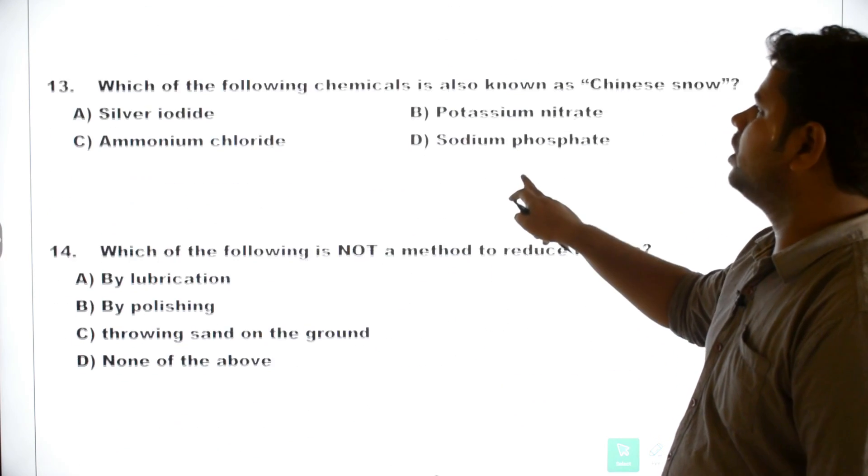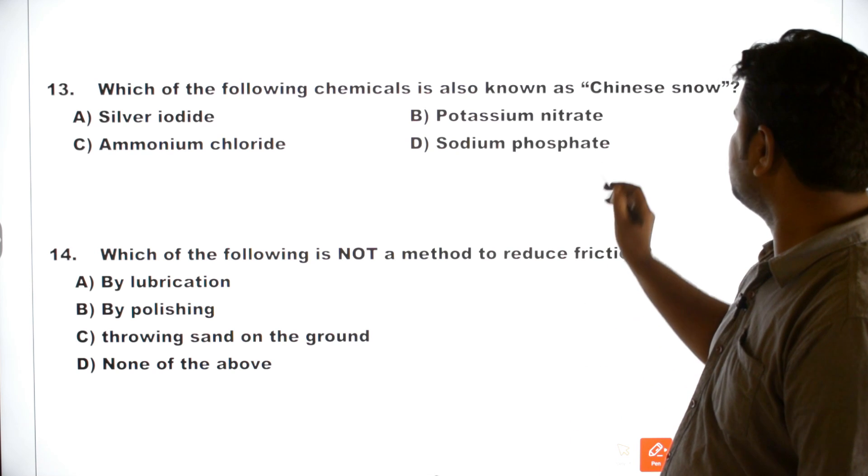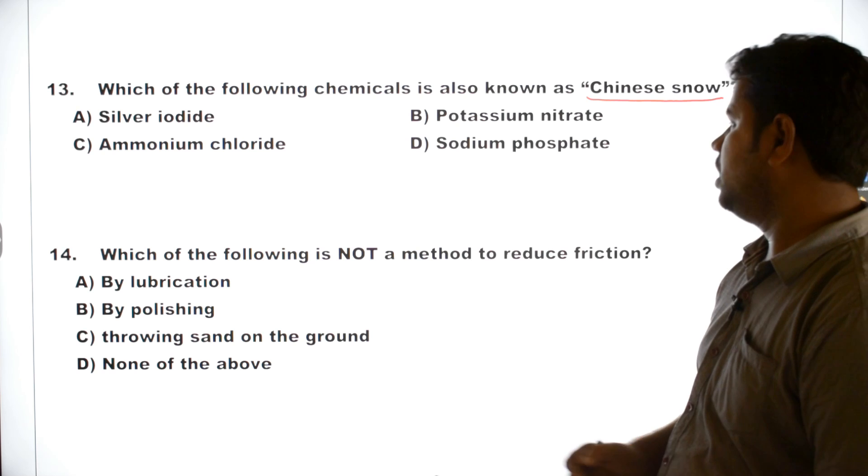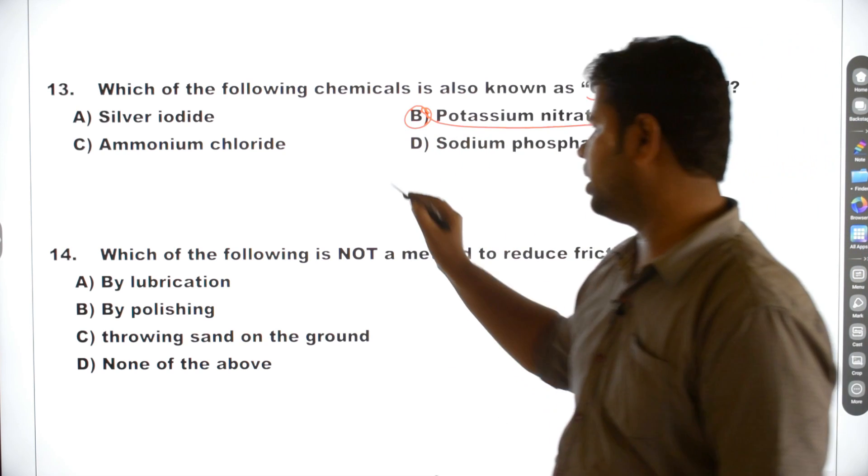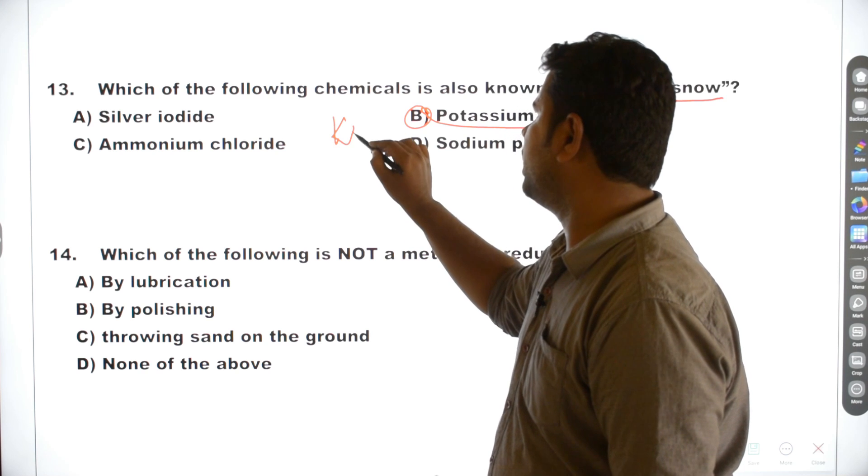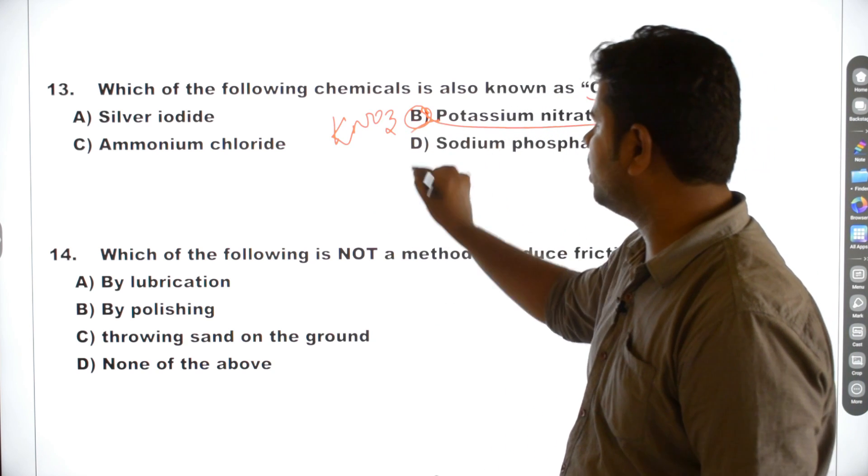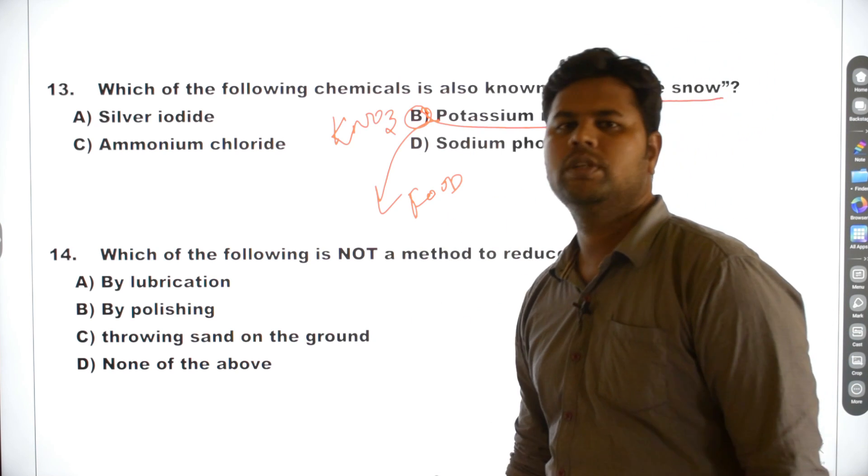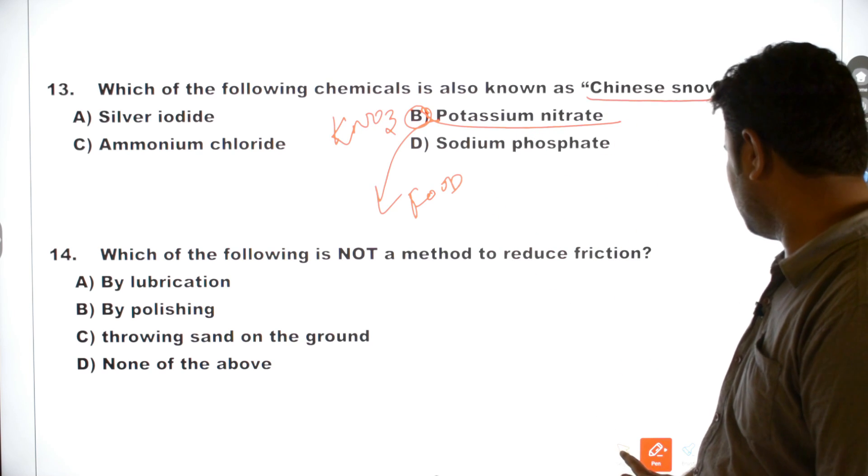Which of the following chemicals is also known as Chinese Snow? Chinese Snow, what is the chemical? The answer is potassium nitrate. Potassium nitrate, what is the formula? KNO3. Potassium nitrate, what is the use of potassium nitrate? That is the answer, option B.